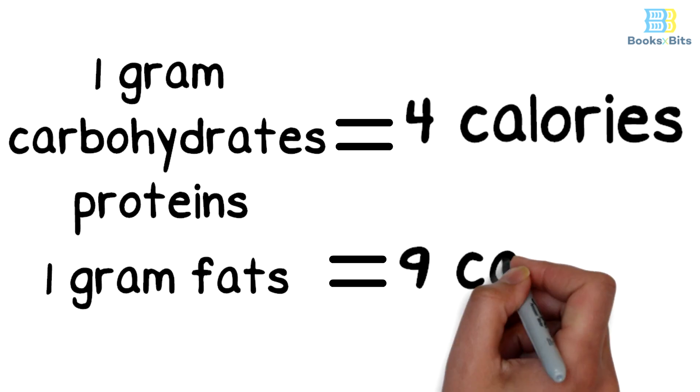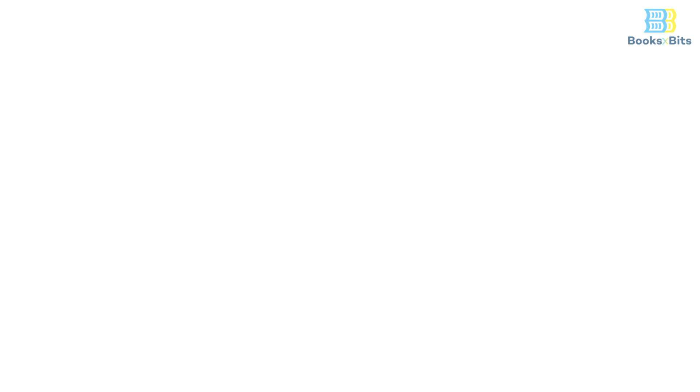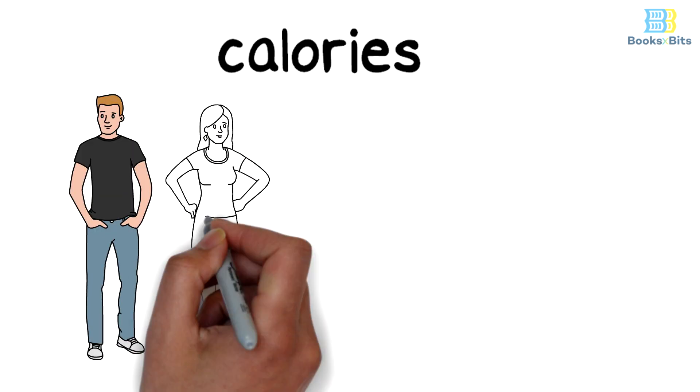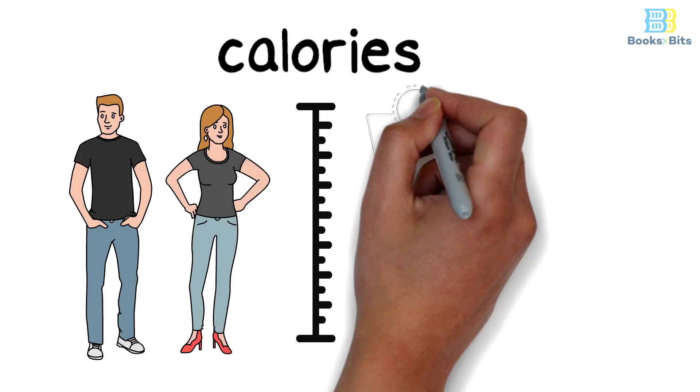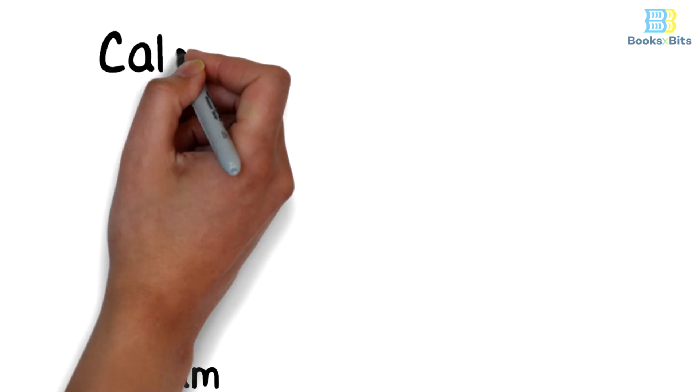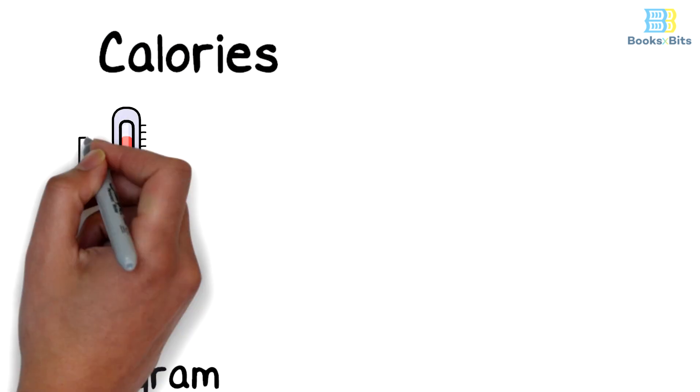The total number of calories required per day varies from one person to another, as it depends on height, weight, age, activity, and growth. Calories are defined as the amount of heat required to raise the temperature of one gram of water by one degree Celsius.